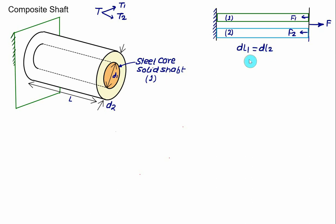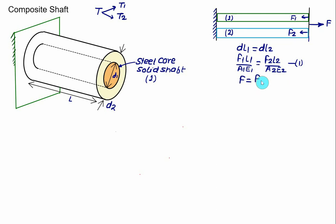In the axial loading case, the compatibility condition is that deformation of bar 1 equals deformation of bar 2: f1·l1/(a1·e1) = f2·l2/(a2·e2). The second equation is summation of Fx = 0, giving f = f1 + f2. These two equations with two unknowns allow us to solve the problem. Almost the same analogy applies for composite shafts — instead of linear deformation, we use angular twist, so the angular twist of the inner shaft equals that of the outer hollow shaft.